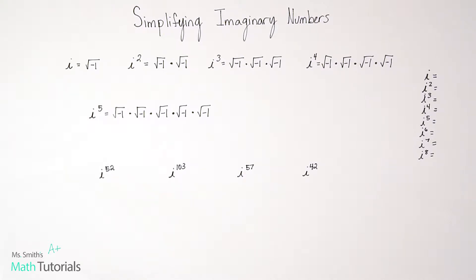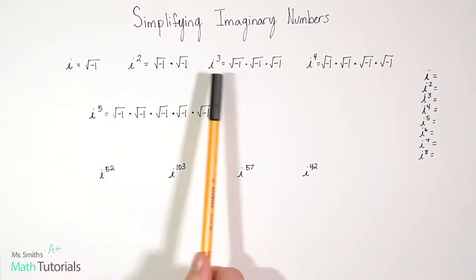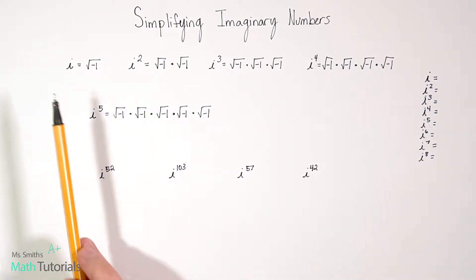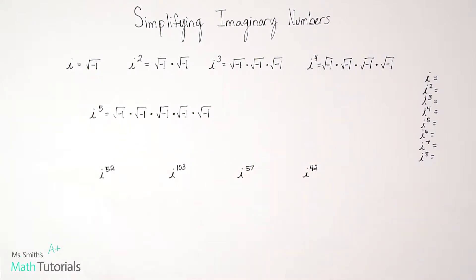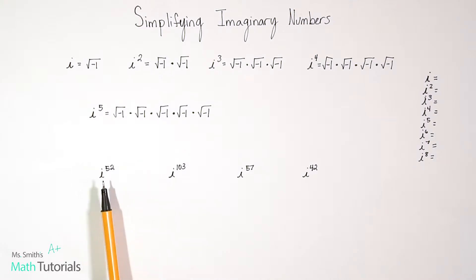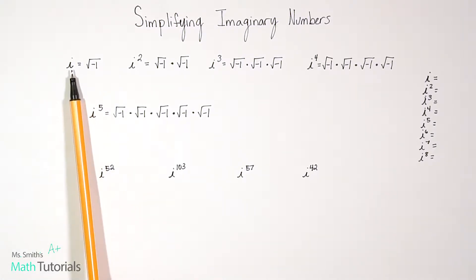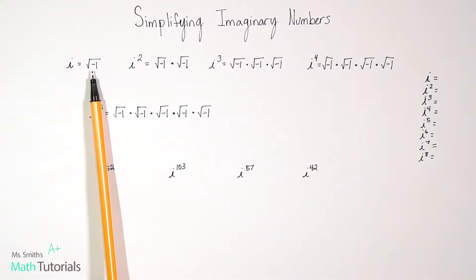An imaginary number is represented with the letter i. We can have i to different powers, which would then translate to mean different things. So today we're going to first break down what i to the different powers means, and then we're going to look at how you could break down a really large power of i — like, what's a cool trick to do that. Our first foundational knowledge is to know that when we see the letter i, what it's really saying — what it represents — is the square root of negative one.